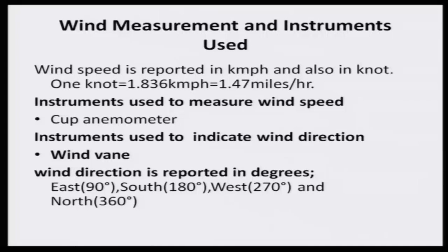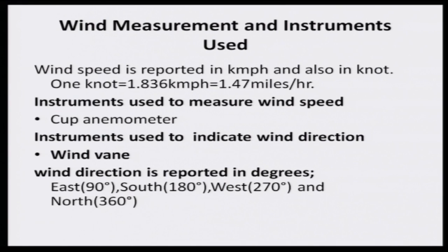How is wind measured and reported? Wind speed is reported in kilometers per hour and also in knots, which are used in navigation. One knot is equal to 1.836 kilometers per hour, which equals 1.47 miles per hour. Miles is the old unit; now we use kilometers per hour. Manually, wind speed is measured through a cup anemometer. The difference between the initial and 24-hour reading gives wind speed over 24 hours; divided by 24 gives wind speed in kilometers per hour.